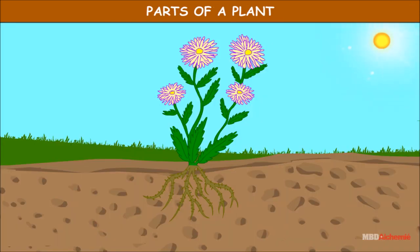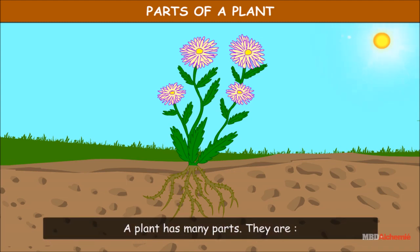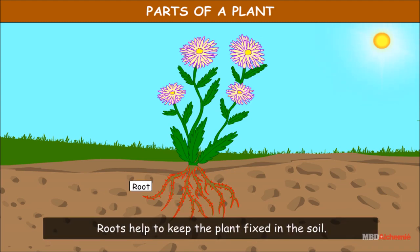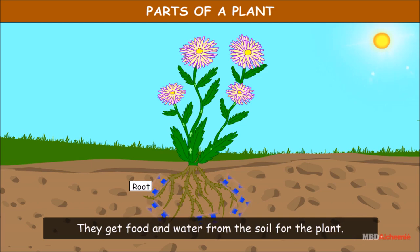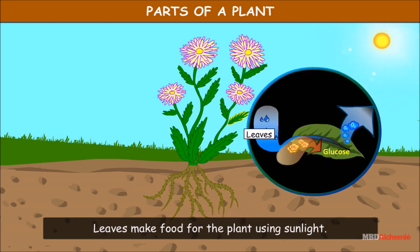Parts of a plant: A plant has many parts. Roots help to keep the plant fixed in the soil. They get food and water from the soil for the plant.